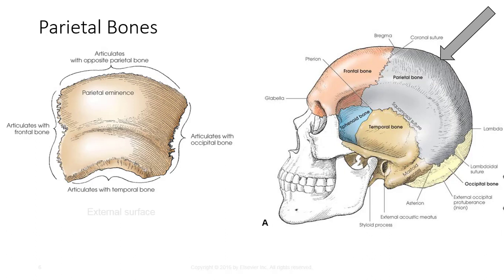The parietal bones are somewhat square in shape. They each have a convex external surface and concave internal surface. They possess the parietal eminence, which is a prominent bulge near the center of the external surface of each bone. This is the point where the width of the skull should be measured to set technique if using calipers to determine your technical factors.